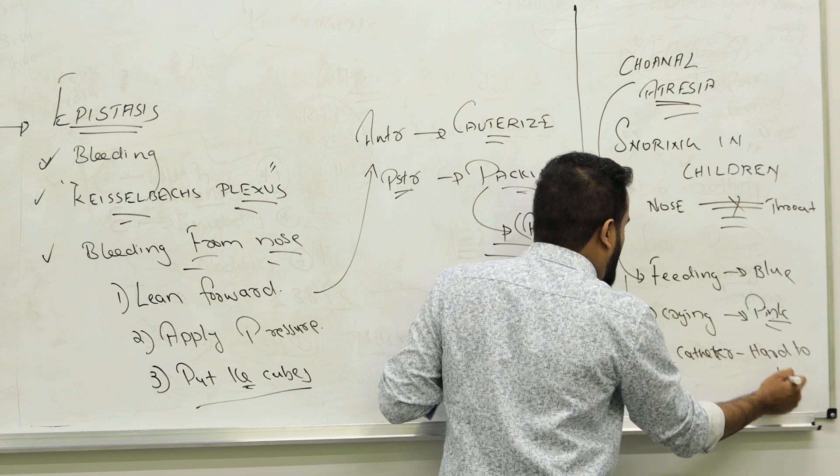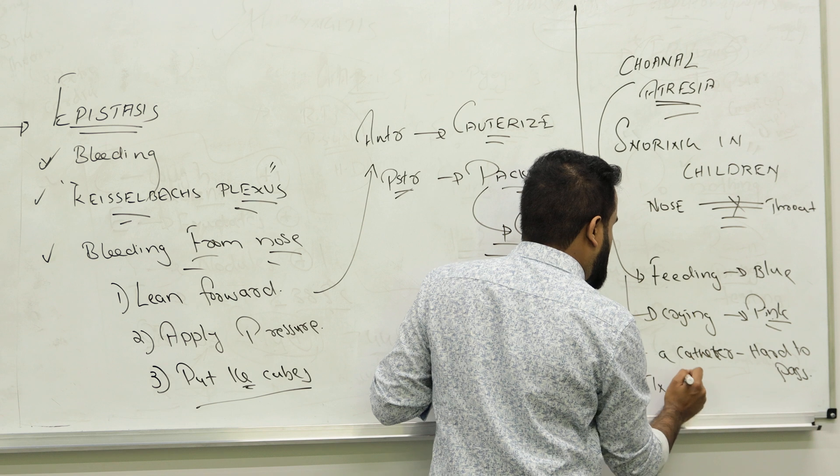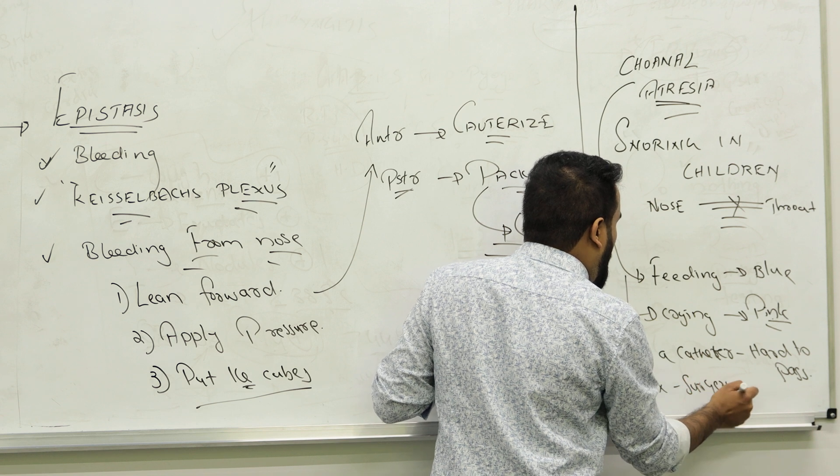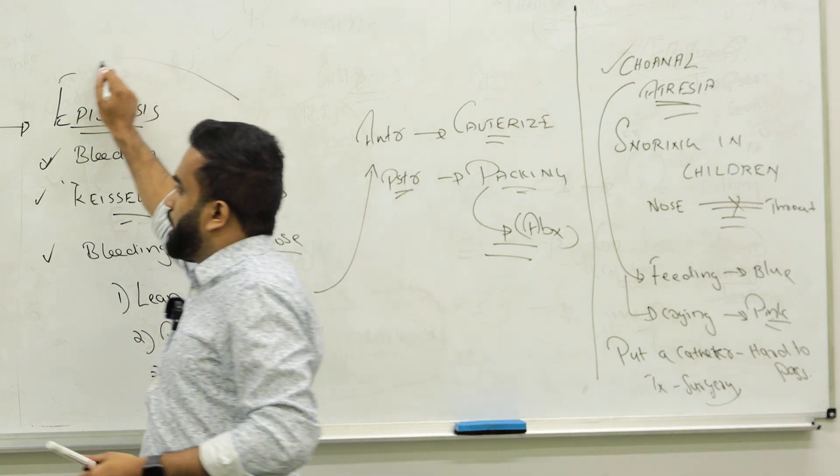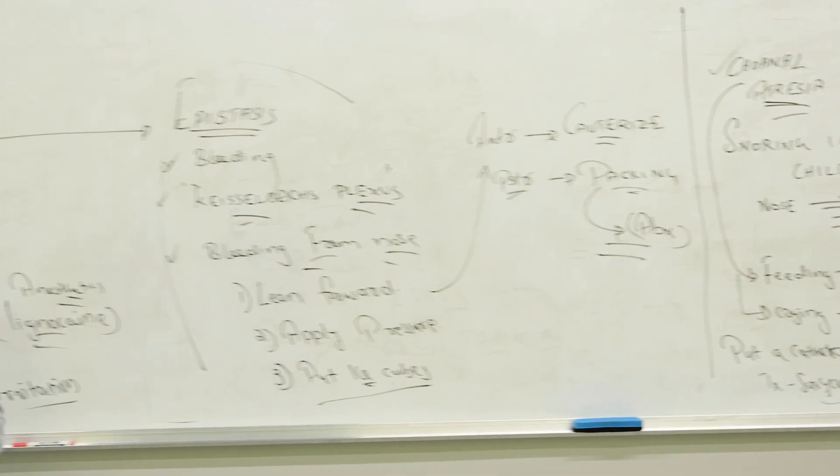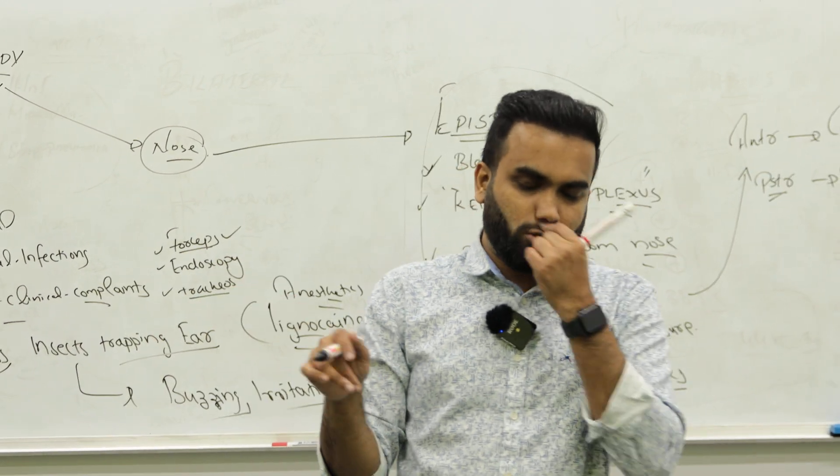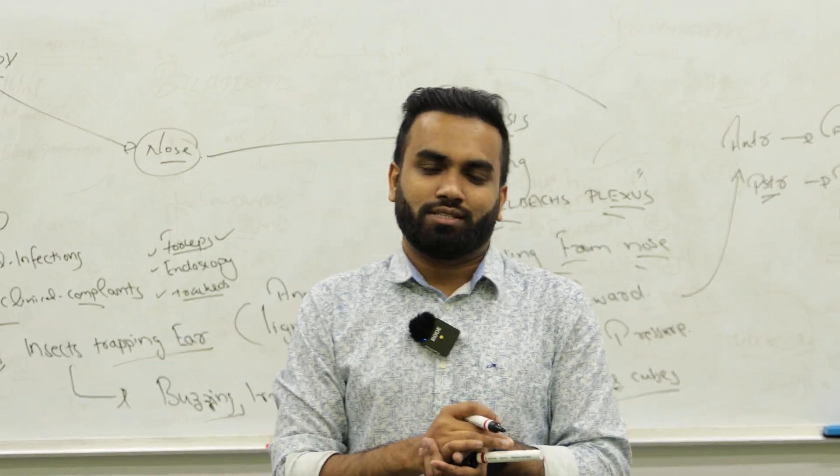So to confirm it you put a catheter through the nose. It is hard to pass, so you confirm it and you go for a surgery. So snoring in children think about choanal atresia, epistaxis how to manage it, and any foreign body in the ear manage with forceps or whatever. Thank you.